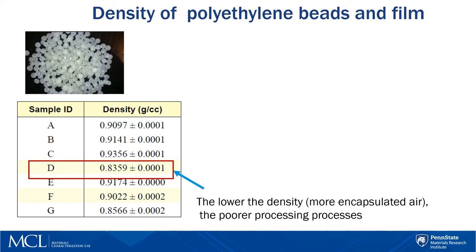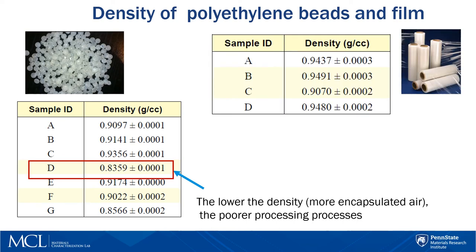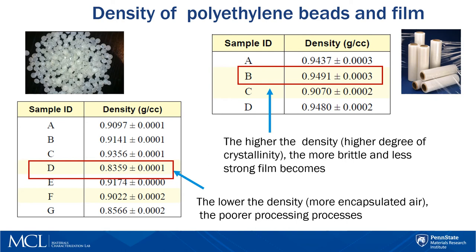Also, samples of extruded film were evaluated. These types of materials cure with time and temperature, and the density increases. With increasing density and a higher degree of crystallinity, the film becomes more brittle and loses its impact strength. The density measurement confirmed that sample B, which had the highest density, was more brittle and subject to tearing compared to other films. Such data give a researcher a simple test to guide the curing process.